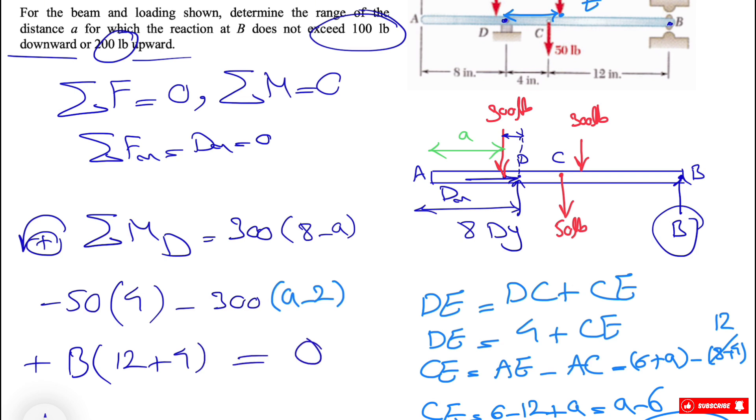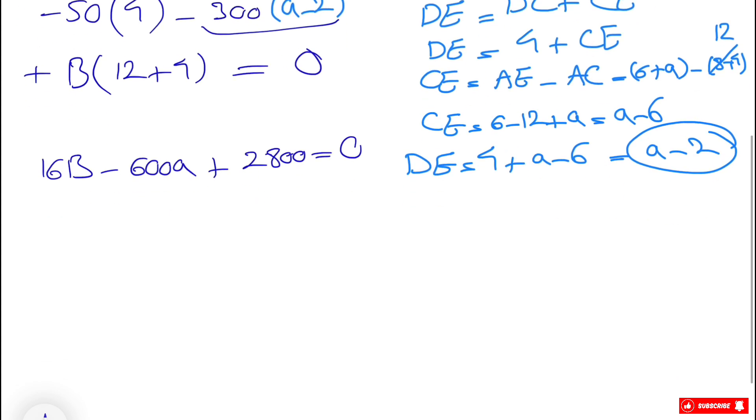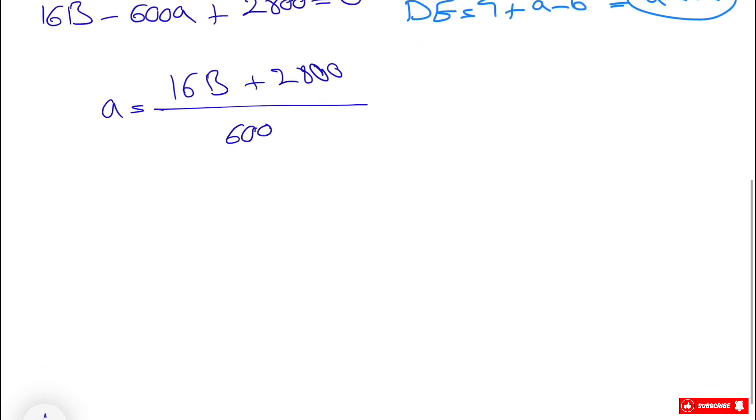And that would be all for our moment equation. So we have 16B minus 600a. If we cancel out these two, so we have minus 300a here and another minus 300a here, so we have minus 600a, and we get 2800 for all the numbers that we have. So we can find a based on B. Our a will be 16B plus 2800 divided by 600. So based on this, we can find our a.